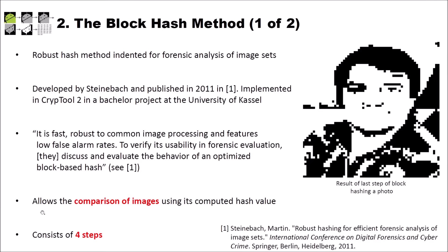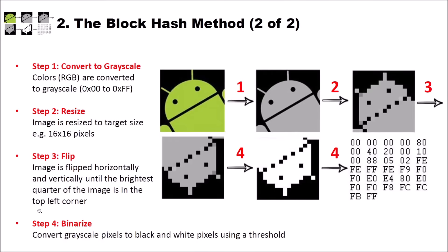Let's have a look at these four steps. Step one: convert to grayscale. Step two: resize. Step three: flip. Step four: binarize — to get our hash value. I used an image of the Android robot. In step one, we convert the image to grayscale, meaning the RGB — the red, green, and blue values — are converted to grayscale values which range from zero to FF.